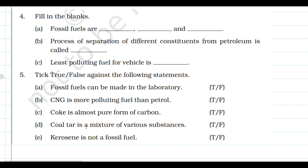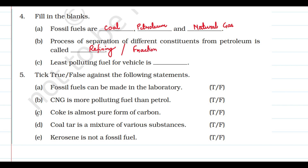Now fill in the blanks. Fossil fuels — as per this chapter — are coal, petroleum, and natural gas. The process of separation of different constituents from petroleum: as per the book it is called refining; otherwise that process is basically fractional distillation. The least polluting fuel for vehicles is CNG, that is Compressed Natural Gas.